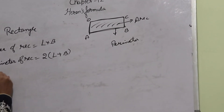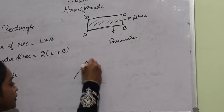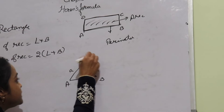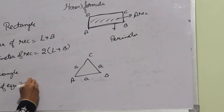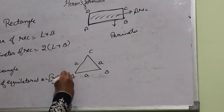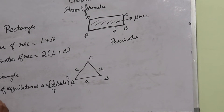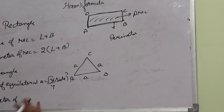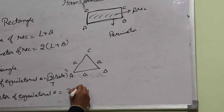Now come to triangles. We have the equilateral triangle, with all sides equal — this is A, B, C. Area of equilateral triangle is root 3 by 4 into side squared. And the perimeter of the equilateral triangle is 3 into side.